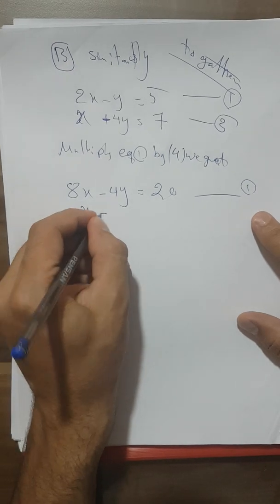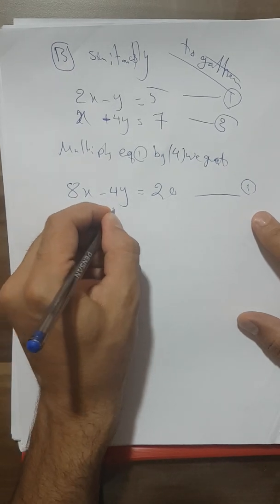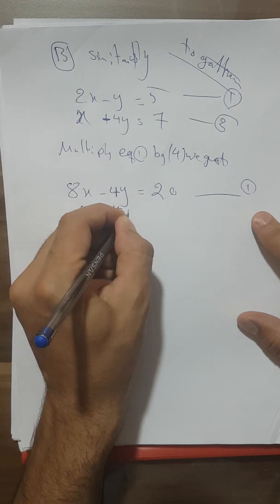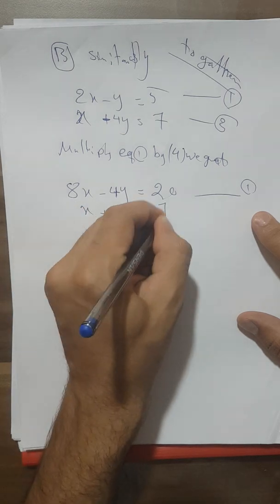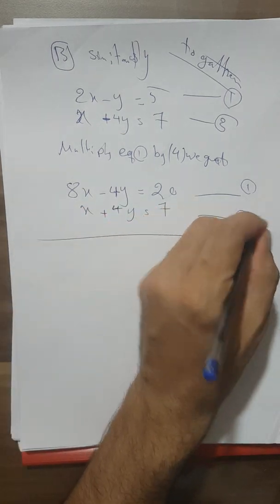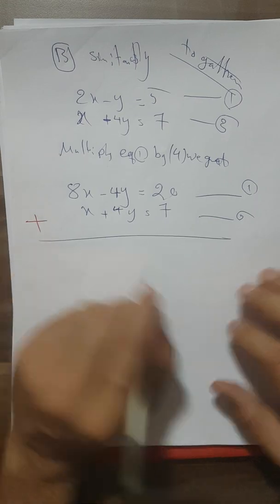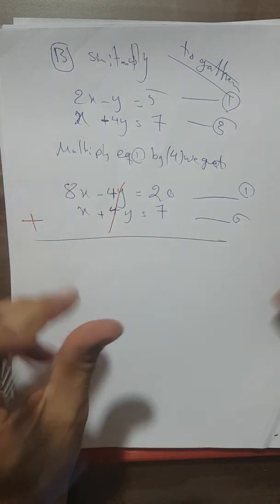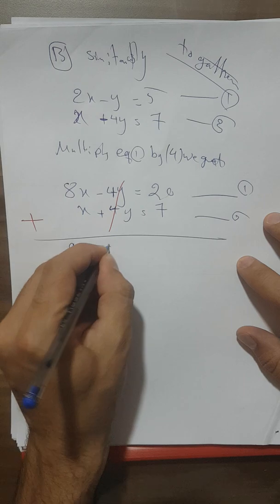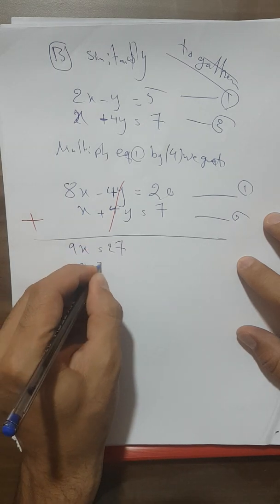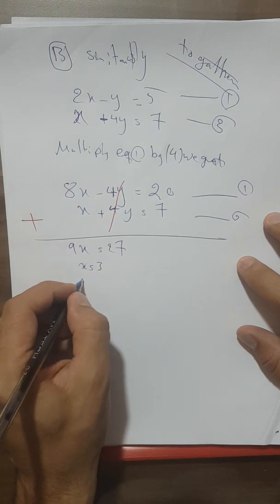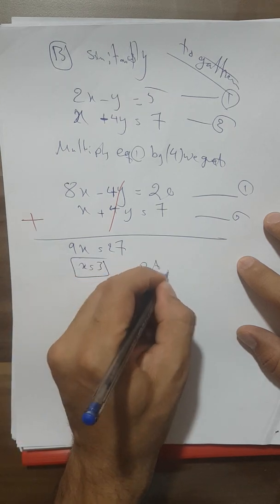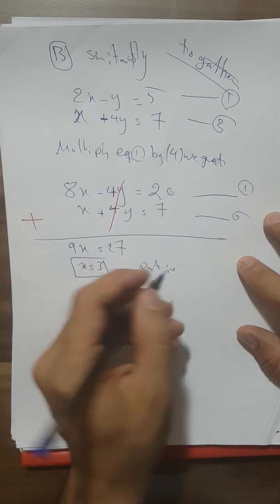The whole equation must be multiplied by 4, keeping the 4y term. Then we add the two equations together: 8x minus 4y plus x plus 4y eliminates the y terms, giving us 9x equals 27, so x equals 3.